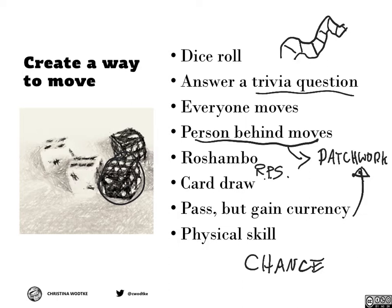Rochambeau — some people think you can play the player, sort of like poker. And then there's physical skill. Let's say you want to design something for people getting flabby during the quarantine — maybe whoever does the most push-ups, that's how many spaces they move.